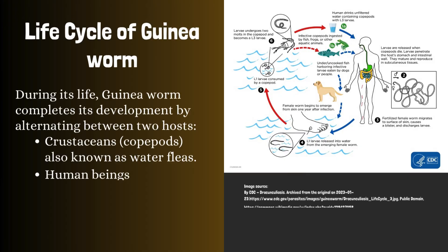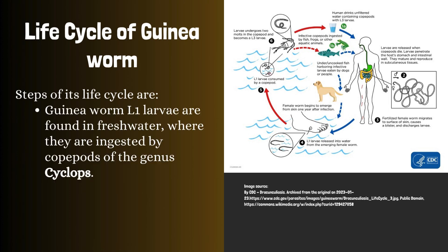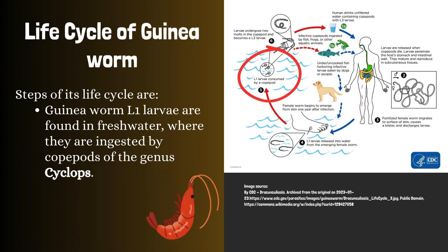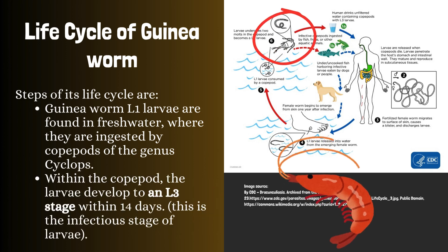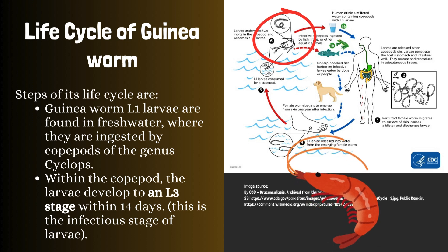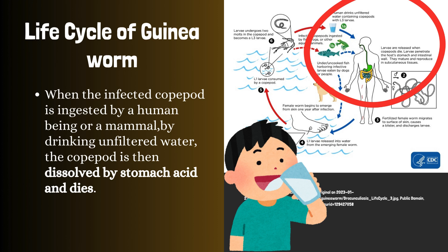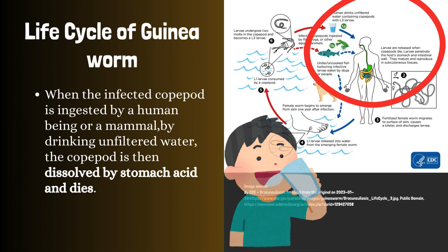Life cycle of guinea worm: during its life, guinea worm completes its development by alternating between two hosts — crustaceans (copepods), also known as water fleas, and human beings. Guinea worm larvae are found in fresh water, where they are ingested by copepods of the genus Cyclops. Within the copepod, the larvae develop to an L3 stage within 14 days. This is the infectious stage of larvae. When the infected copepod is ingested by a human being or a mammal by drinking unfiltered water, the copepod is dissolved by stomach acid and dies.